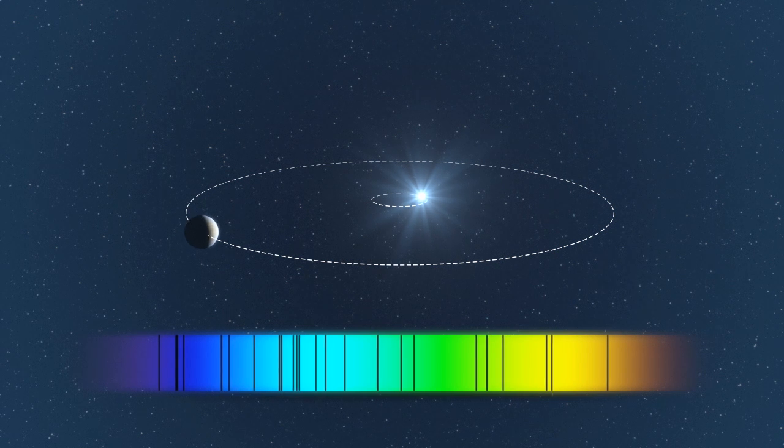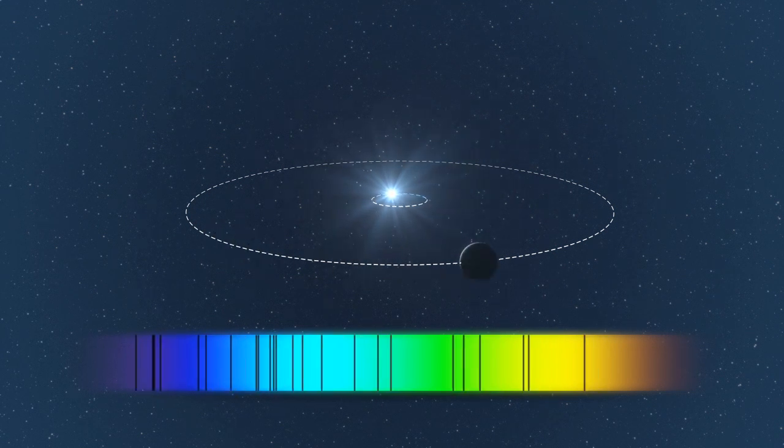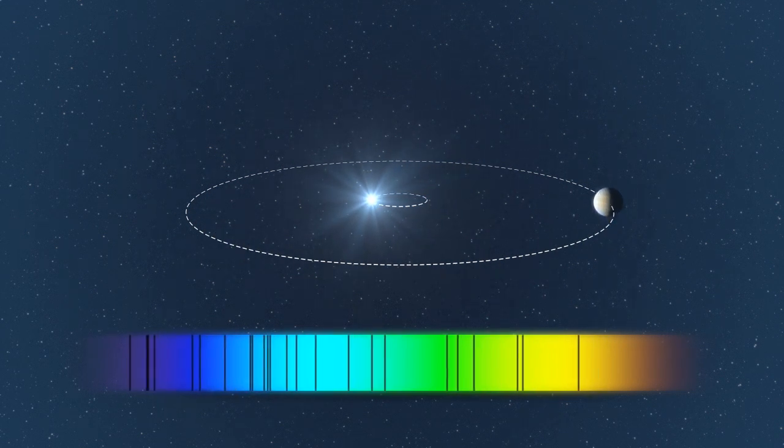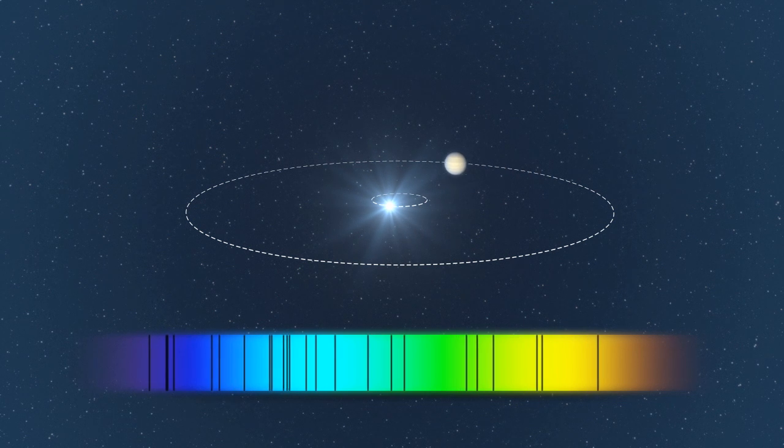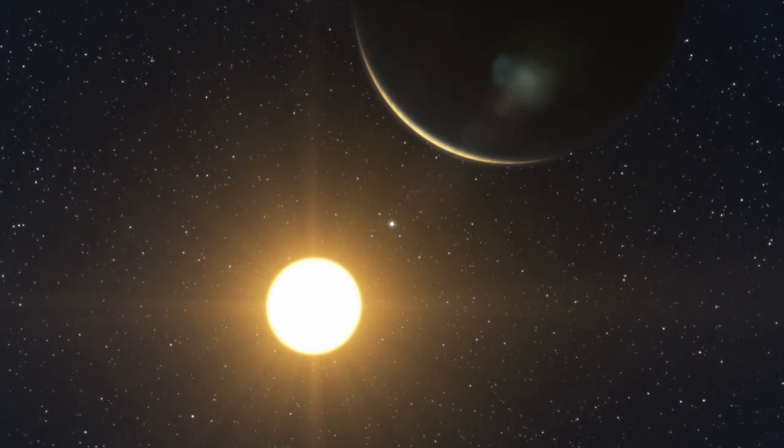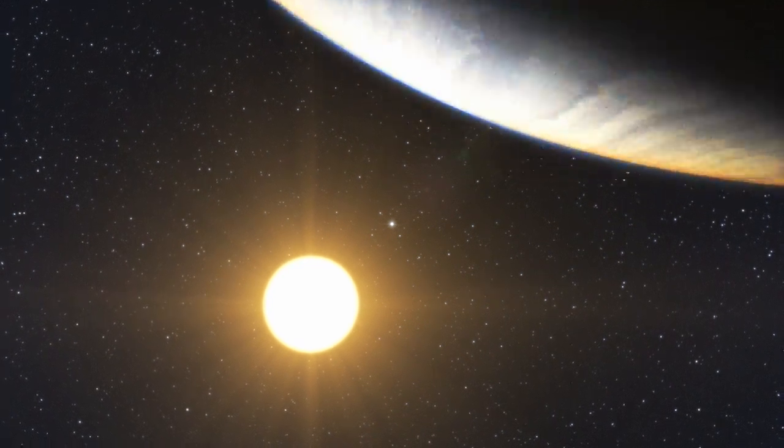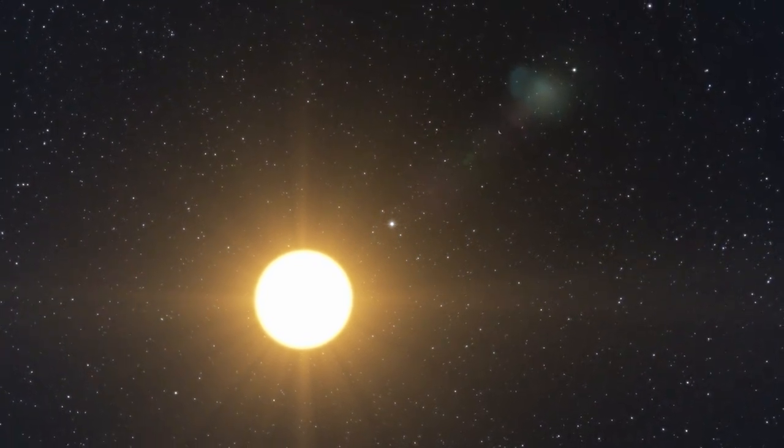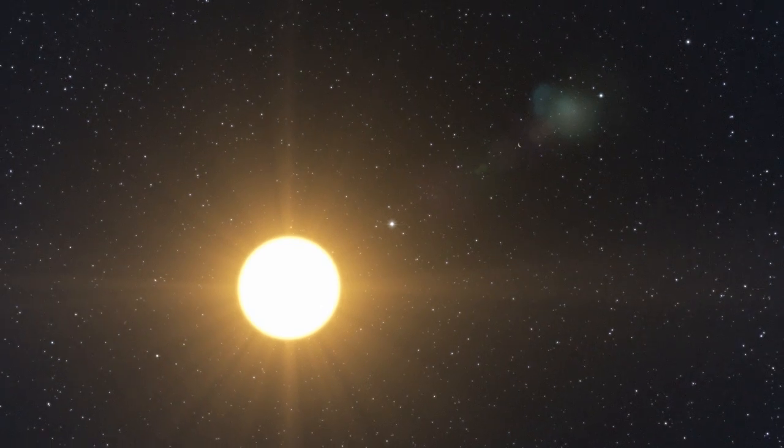Thanks to the 190 individual HARPS measurements, the astronomers detected the wobbles of the star caused by five or more planets. The five strongest signals correspond to planets with Neptune-like masses, between 13 and 25 Earth masses, which orbit the star in between six to six hundred days.